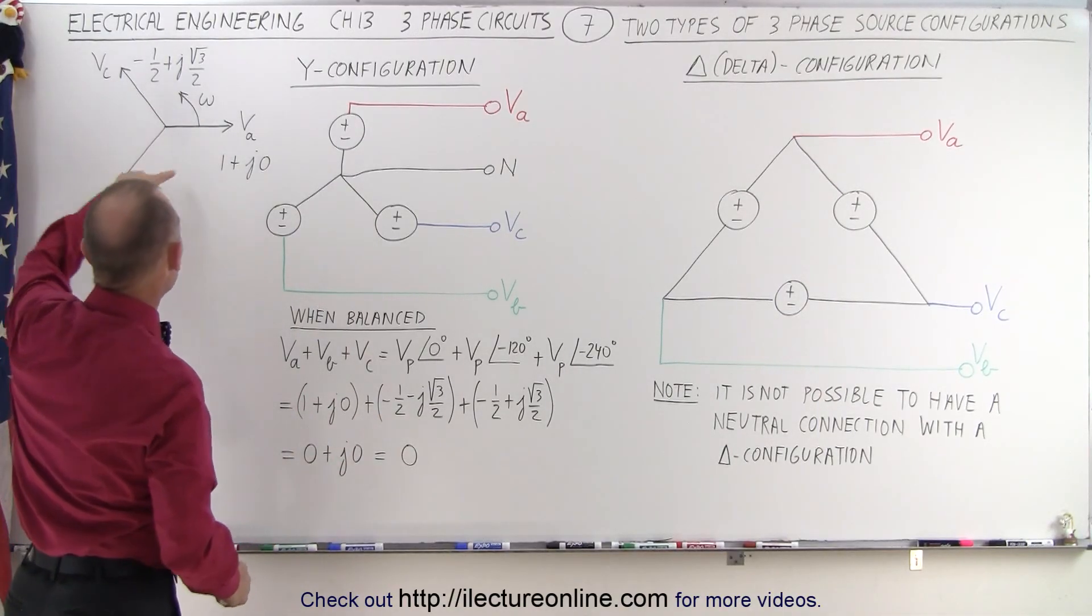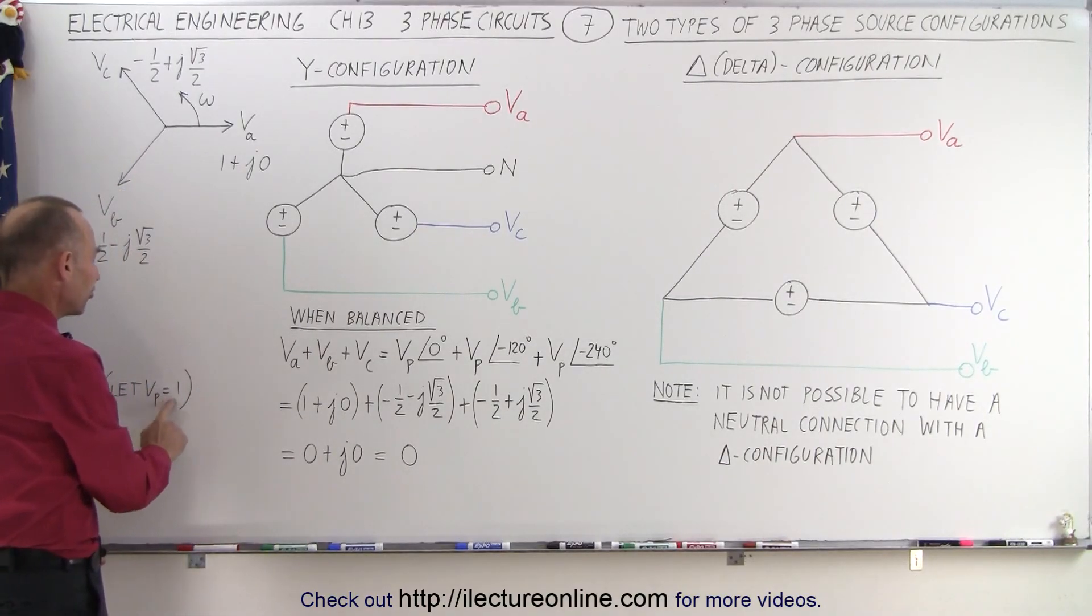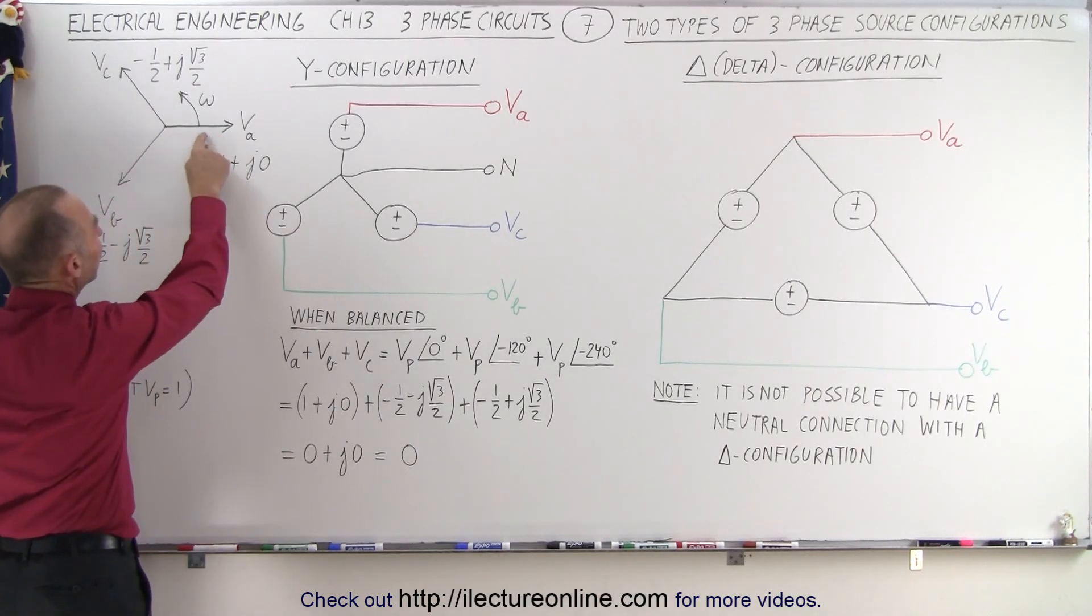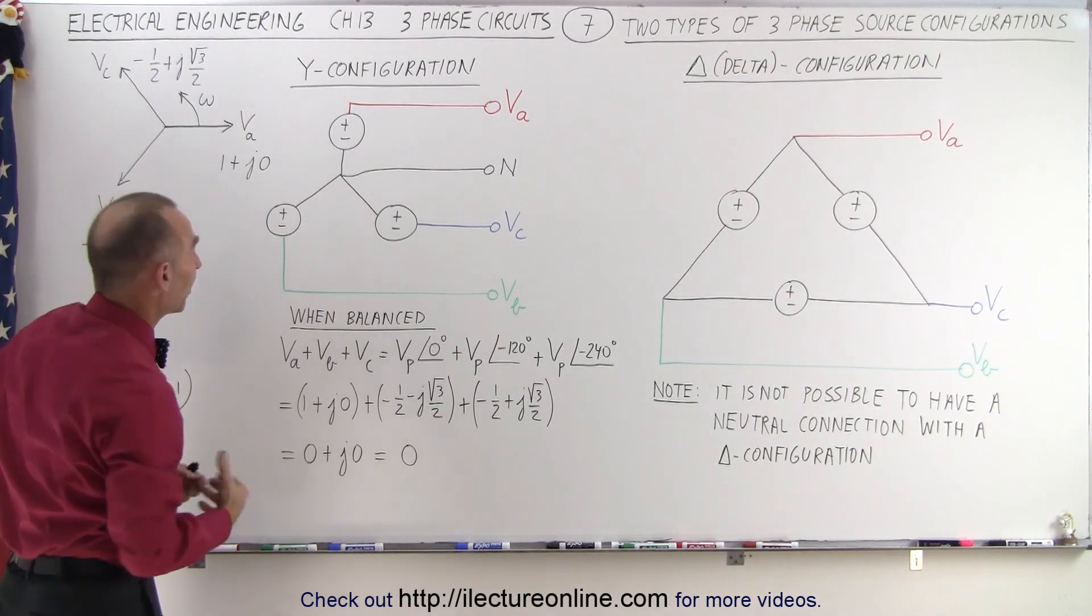Notice we've drawn a phase diagram here for our benefit, and to make things simple, let's call the phase voltage equal to 1. If that's the case, V-A will be in phase with the zero position right here, and therefore will have a magnitude of 1 for the real part, and a magnitude of 0 for the imaginary part.